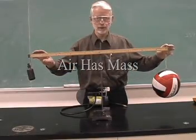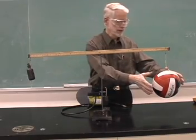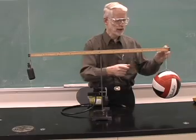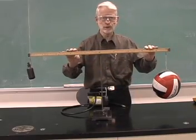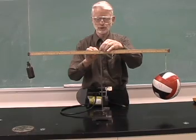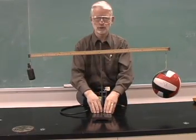One way to show that air has mass is to tie a string around a volleyball and suspend it from a meter stick which is supported at the center using a nail attached to a clamp and retort stand.